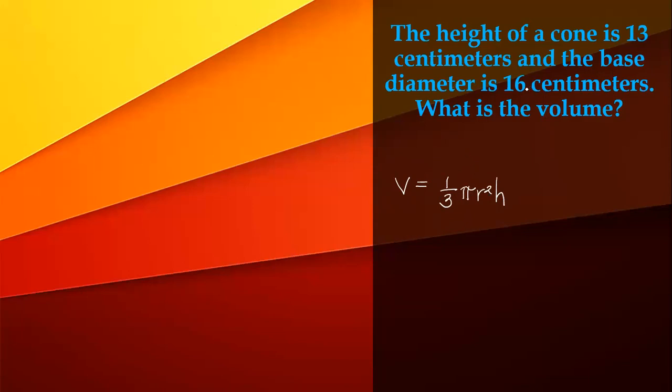we don't have the radius. We have only the diameter of a cone and the height. So to get the radius of a cone, radius equals diameter divided by 2. So the diameter given is